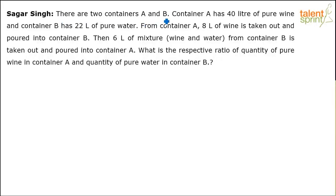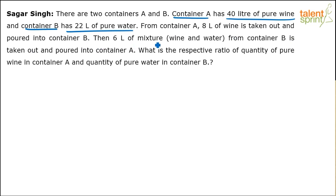There are two containers A and B. Container A has 40 liters of pure wine and container B has 22 liters of pure water. From container A, 8 liters of wine is taken out and poured into container B. Then 6 liters of mixture of wine and water from container B is taken out and poured into container A. What is the respective ratio of pure wine in container A to pure water in container B? That's an interesting one from allegations and mixtures.